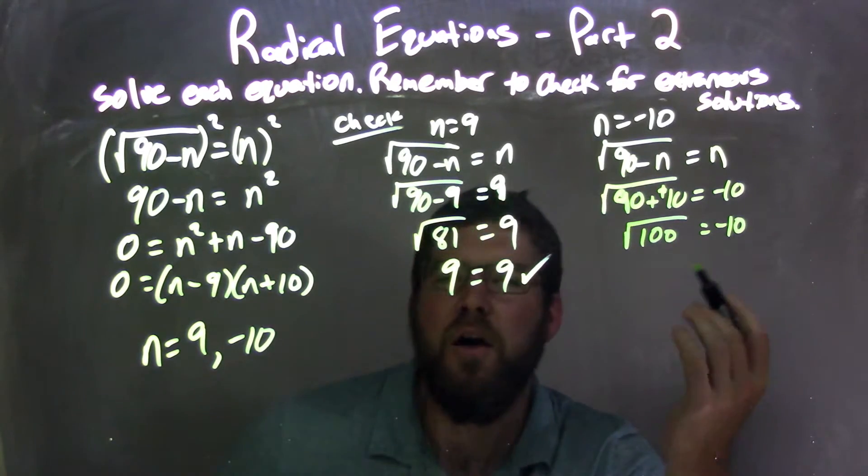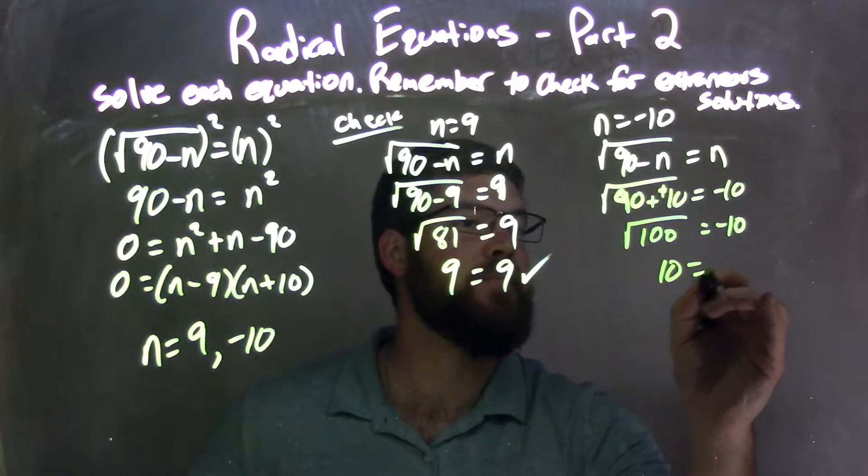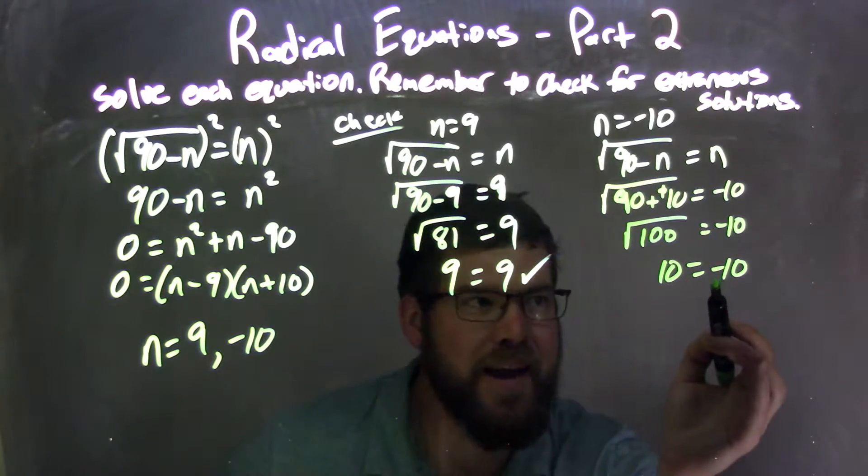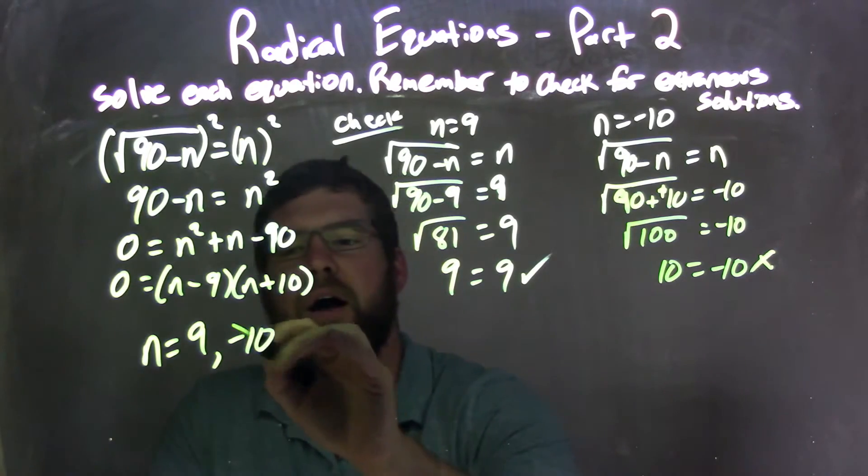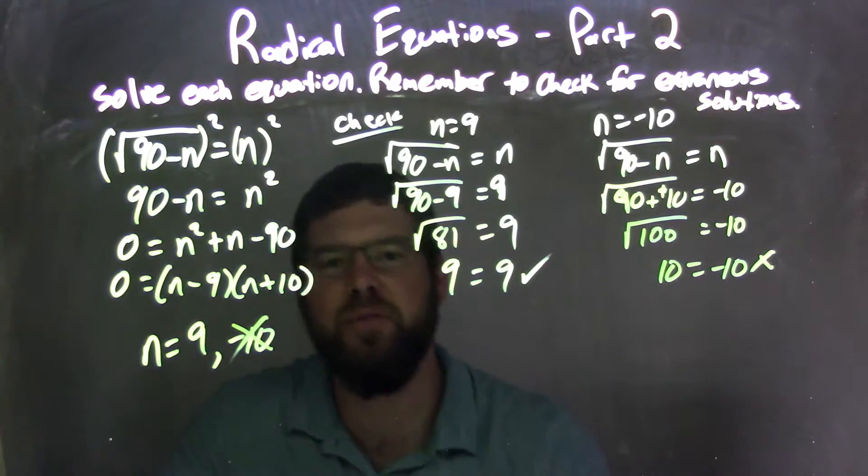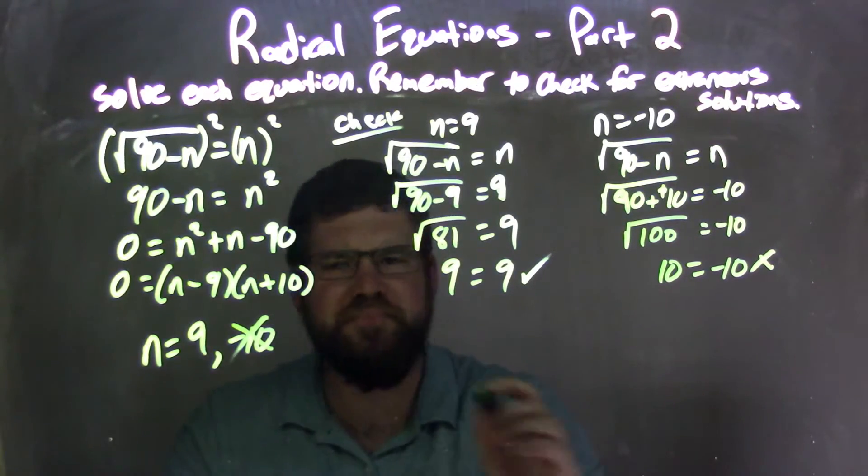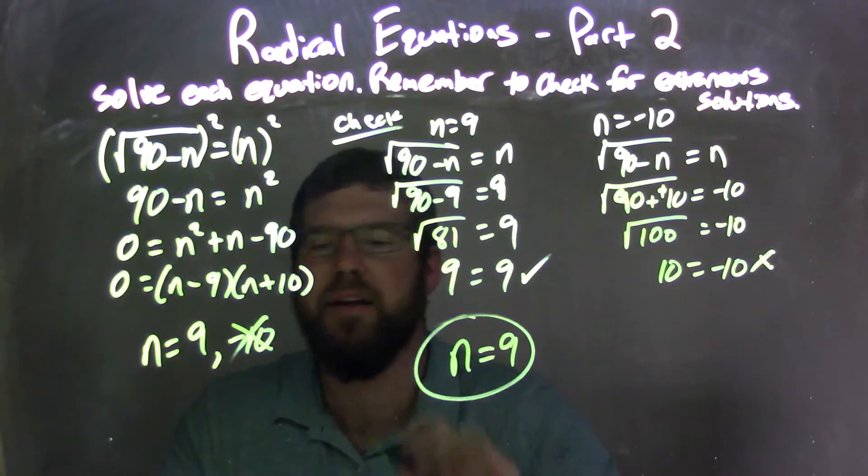Square root of 100 equals negative 10. Square root of 100 is just 10. Oh, 10 and negative 10 are not equal. One's negative, one's positive. So negative 10 is an extraneous solution that we have written up there. So our only true answer here is n equals 9.